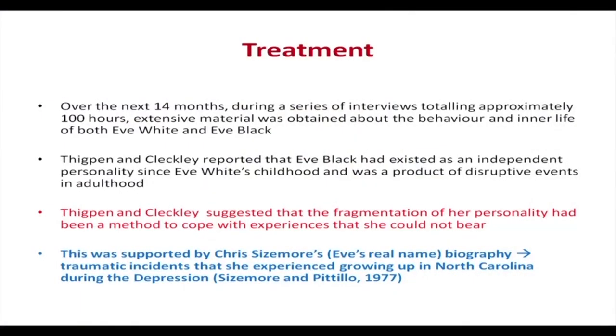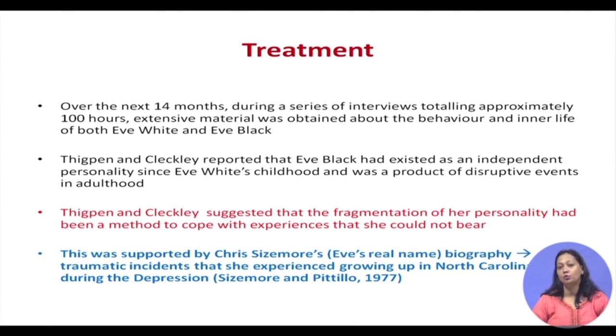If you go through Chris Sizemore's book — Chris Sizemore is Eve White's real name — you will see that she talks about really unfortunate childhood experiences. For instance, her father used to work in a saw mill, and one day a siren indicated an accident. She ran as a child and saw a man who had been cut in two at the waist. This was a very unpleasant experience, and Eve White talks about seeing another personality — another girl — standing there looking at the event. This fragmentation of personality, as Thigpen and Cleckley suggested, had happened from childhood.